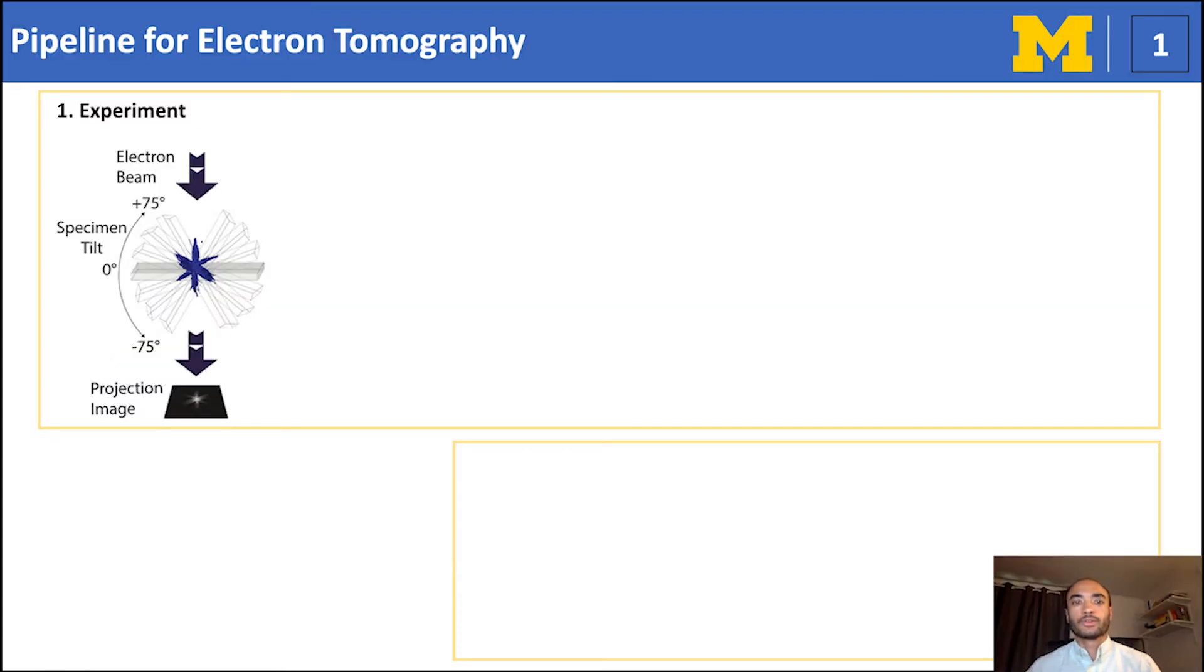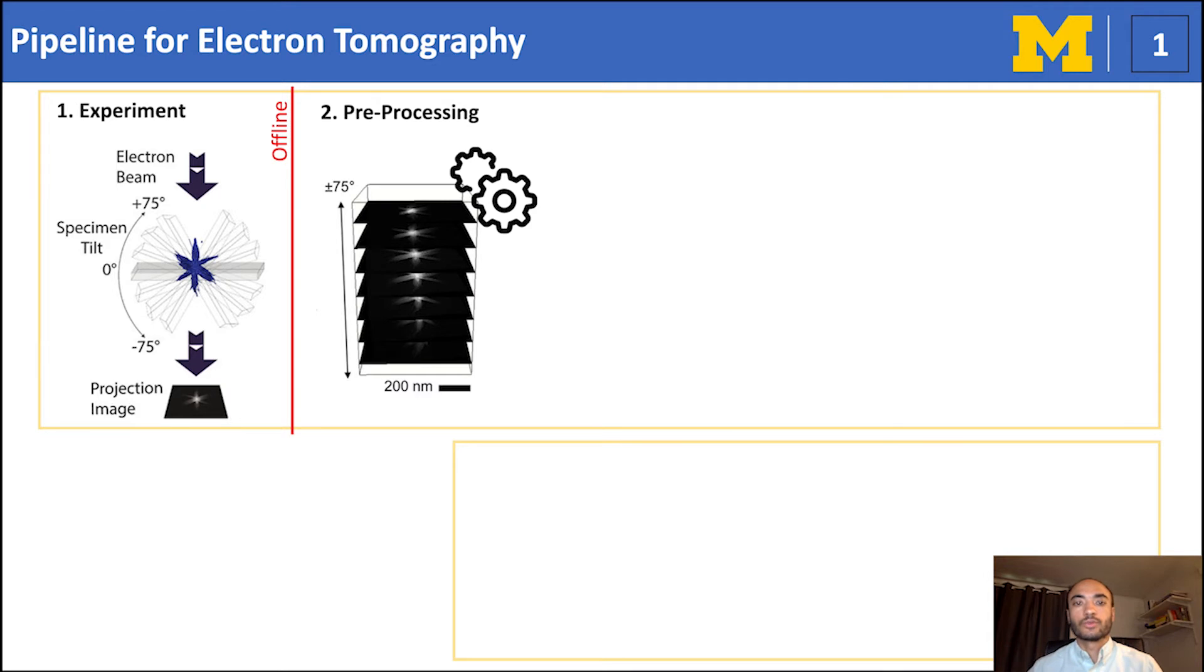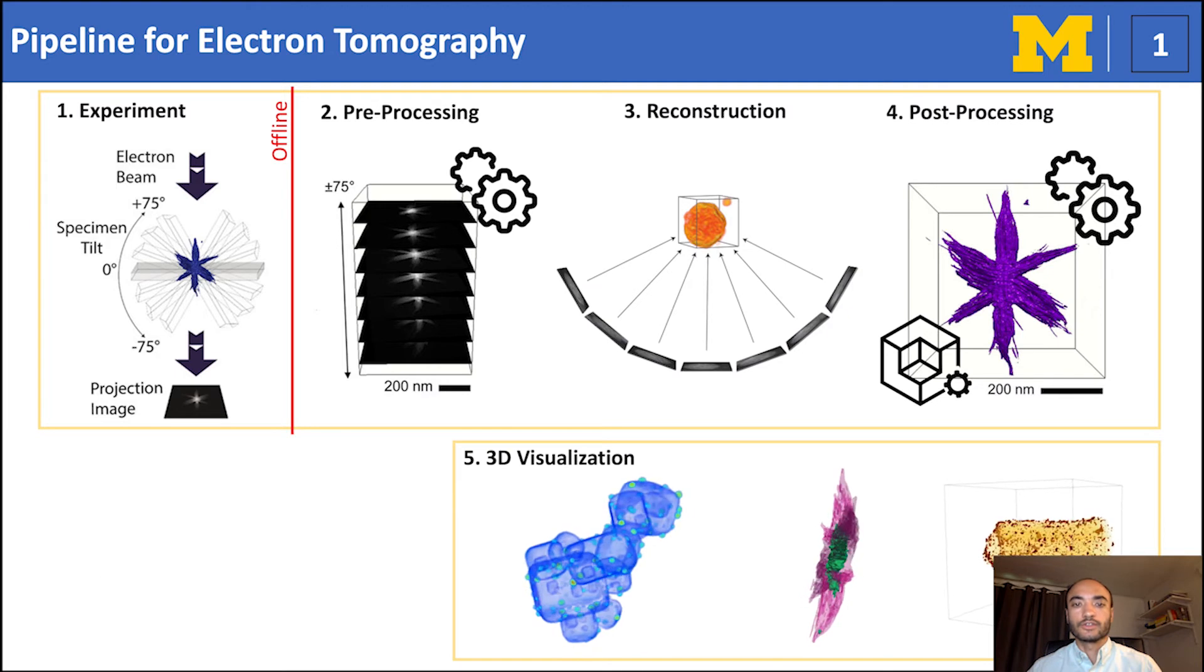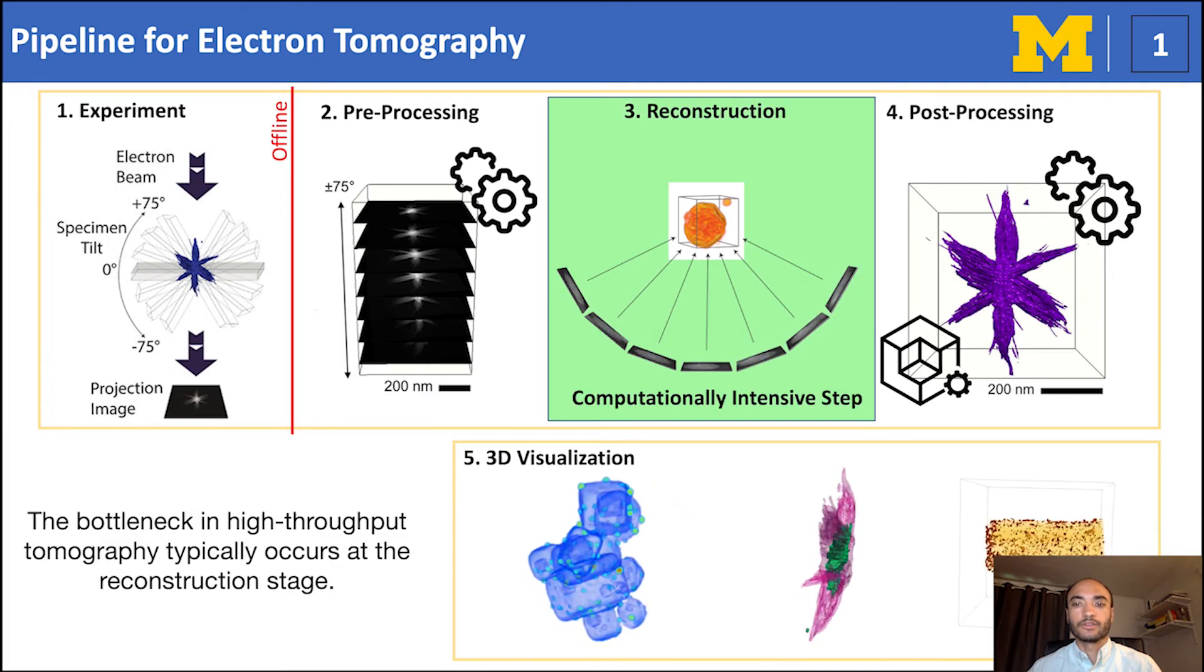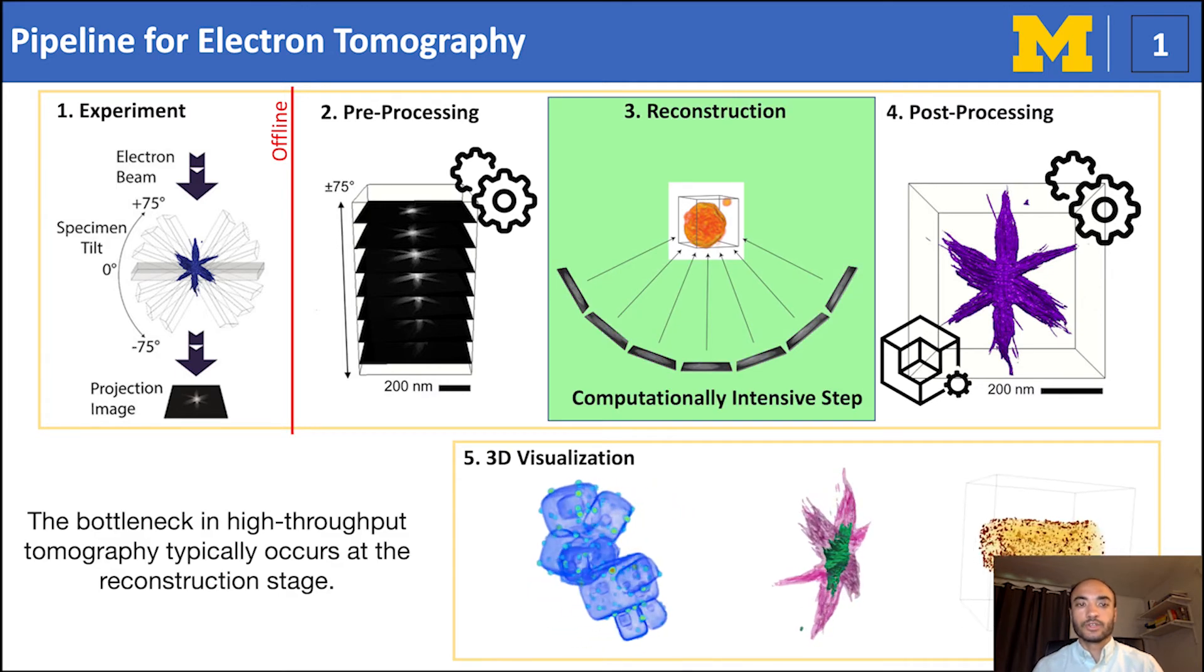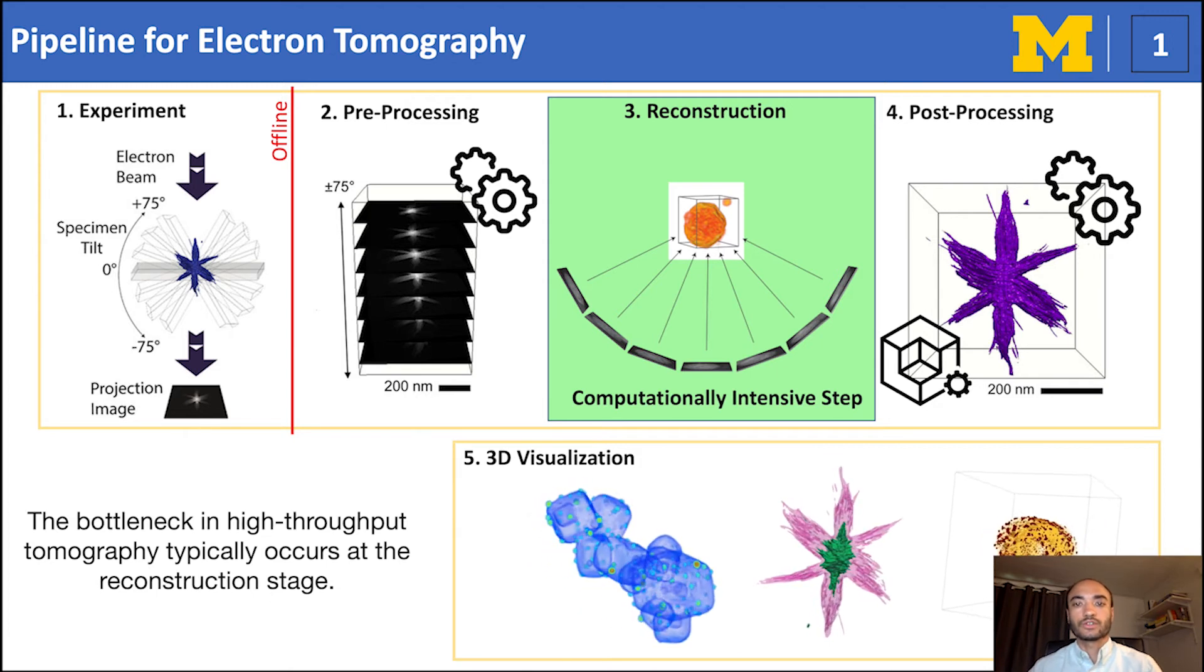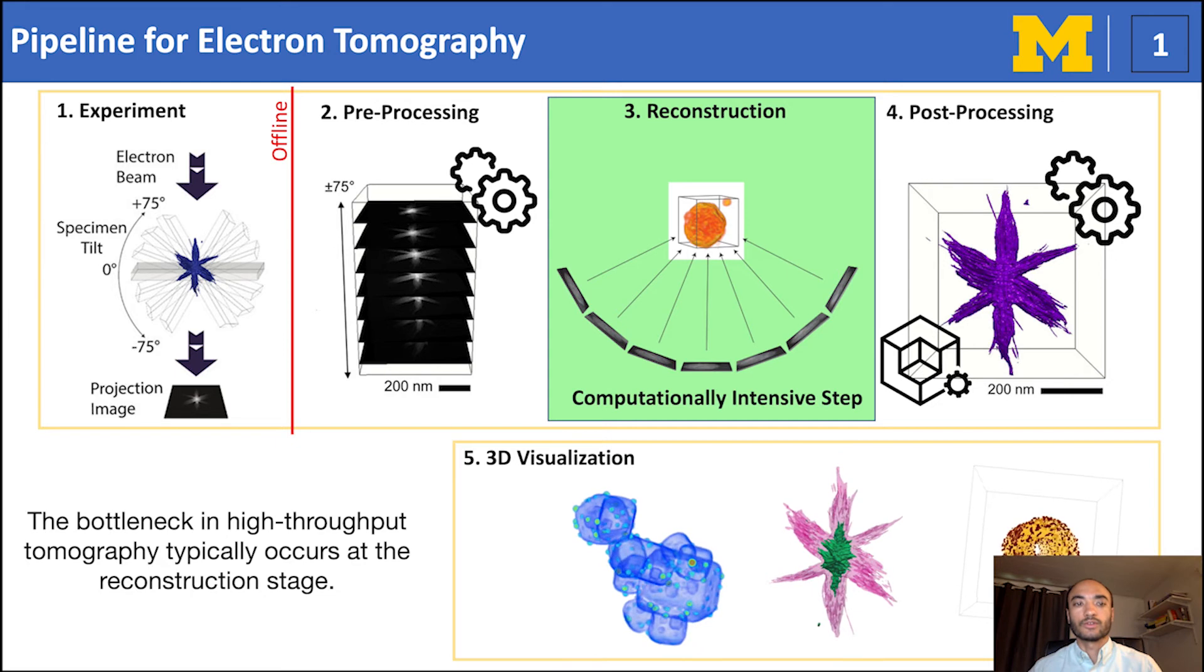The general pipeline for tomography is composed of five stages. First, we experimentally collect projection images of our sample. After all the data has been collected, the following steps are performed offline on a dedicated workstation. The tilt series is pre-processed, reconstructed, and the volumes manipulated prior to visualizing the final product. However, this reconstruction stage is the most computationally and time-demanding step, especially for projection images composed of 2K by 2K pixels and above. These reconstruction algorithms can easily take hours to days to complete.